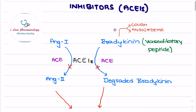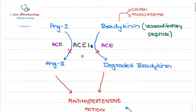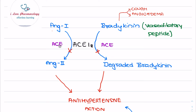Moving on to the mechanism of action: these angiotensin converting enzyme inhibitors inhibit the angiotensin converting enzyme activity, which is required for conversion of angiotensin 1 to angiotensin 2. Angiotensin 2 is responsible for increase in peripheral vascular resistance, vasoconstriction, and retention of sodium, as well as production of aldosterone, indirectly leading to increase in blood pressure and volume overload.